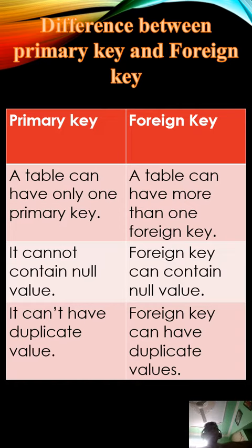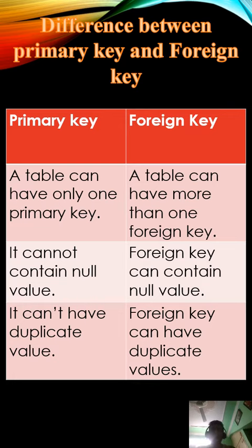The third point: a primary key can't have duplicate values. For example, in a roll number column, if a value is 15, you can't enter 15 again — no duplicate values are allowed in a primary key. However, a foreign key can contain duplicate values.